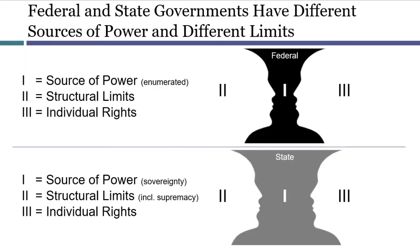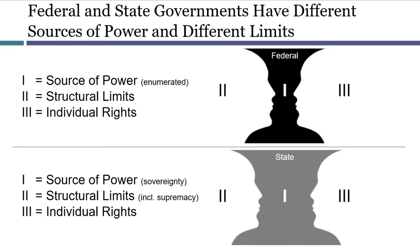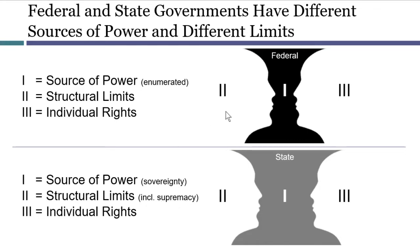When it comes to powers, the federal government only has power to enact laws on enumerated topics. By contrast, states may simply rely on their sovereignty as the source of power for a law on any topic. When it comes to limits, the states face a structural limit that the federal government does not — and that's the limit of federal supremacy. Federal-level laws are considered supreme, and they can override any conflicting state laws. So these are the concepts that are battled out in McCulloch and in Gibbons.